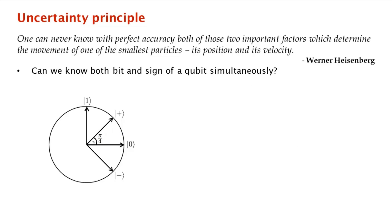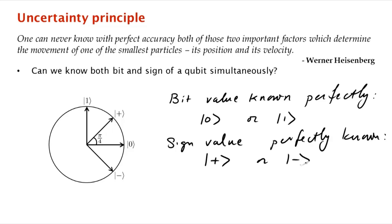So what would a state look like where we know the bit value well? Well, to know the bit value, to know it known perfectly, what must the state look like? Well, it must look either like 0 or 1. Of course, we can have an arbitrary phase in front, but let's ignore that for the moment. Let's imagine we are on the real plane and we don't want to worry about this unknown phase. What about for the sign value to be known perfectly? So for the sign value to be perfectly known, it must be in the state plus or minus.